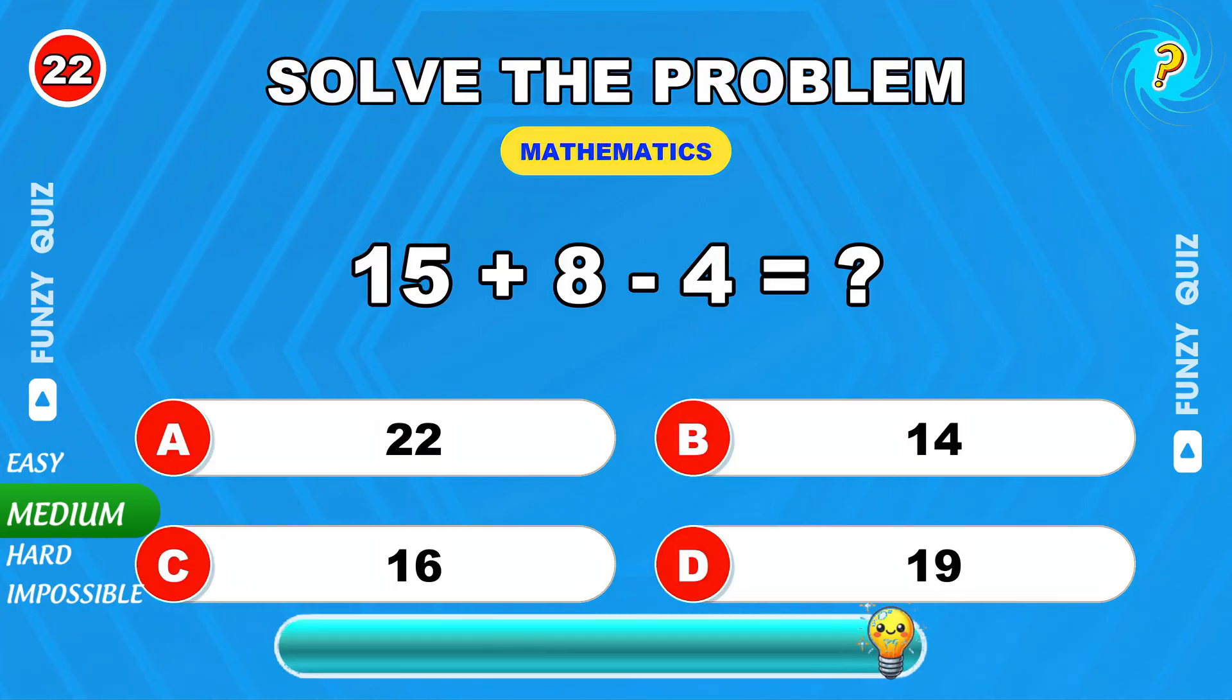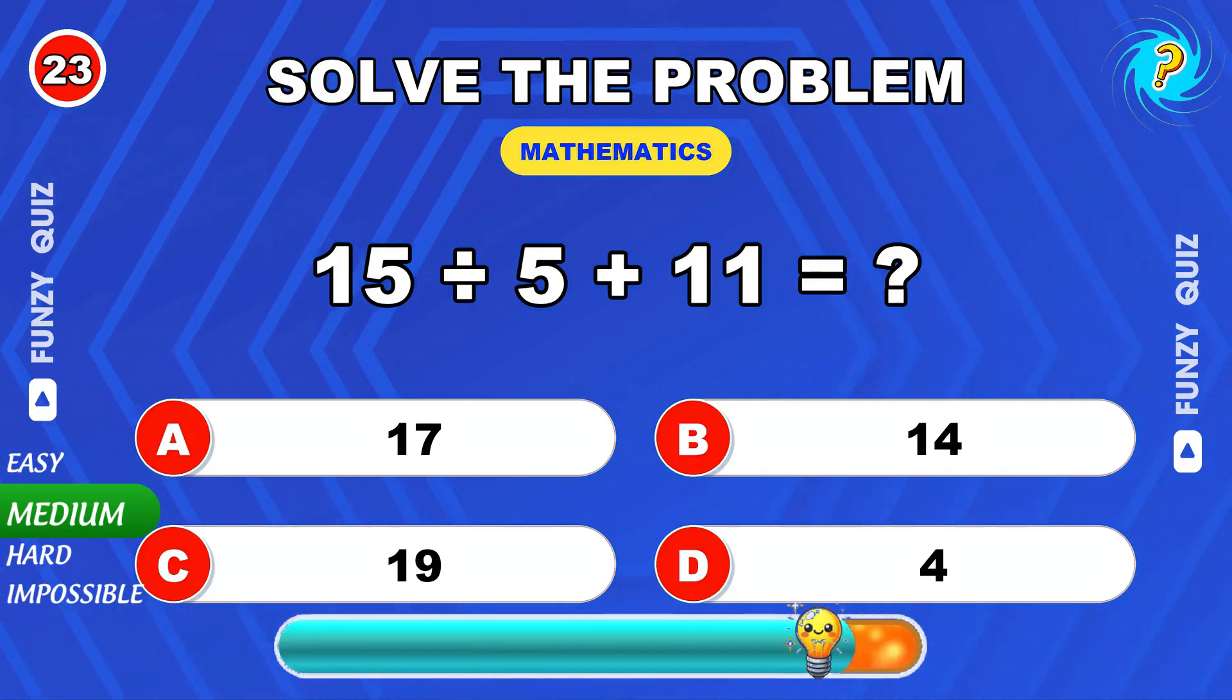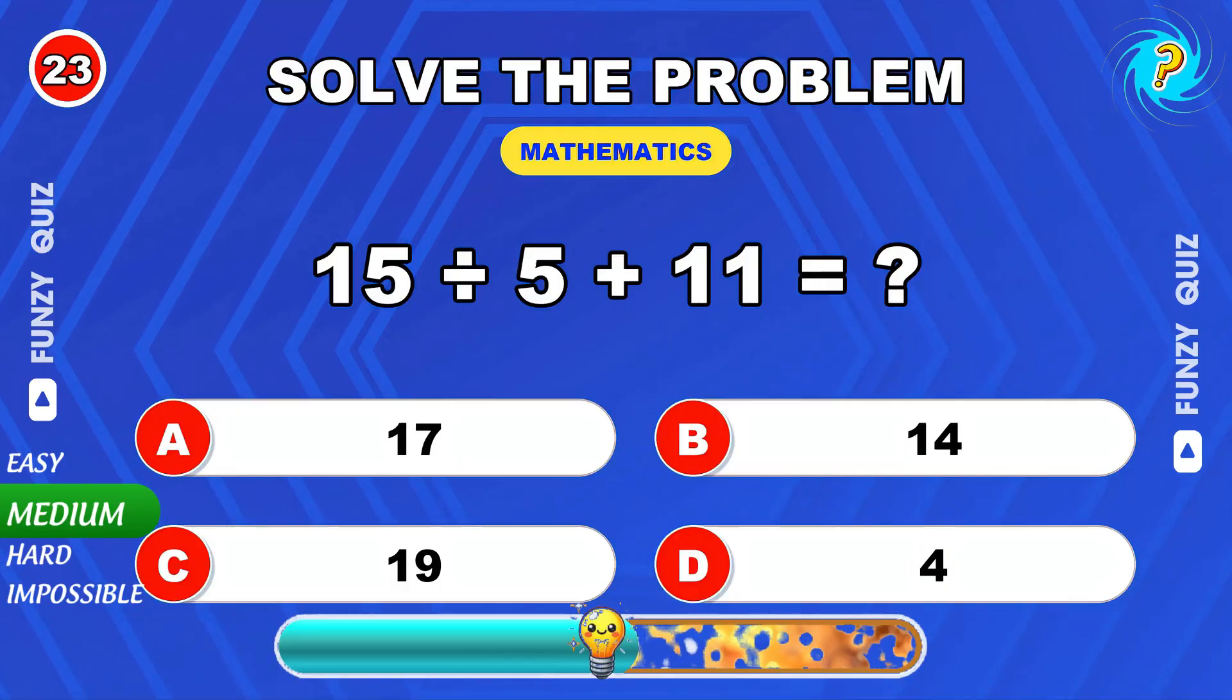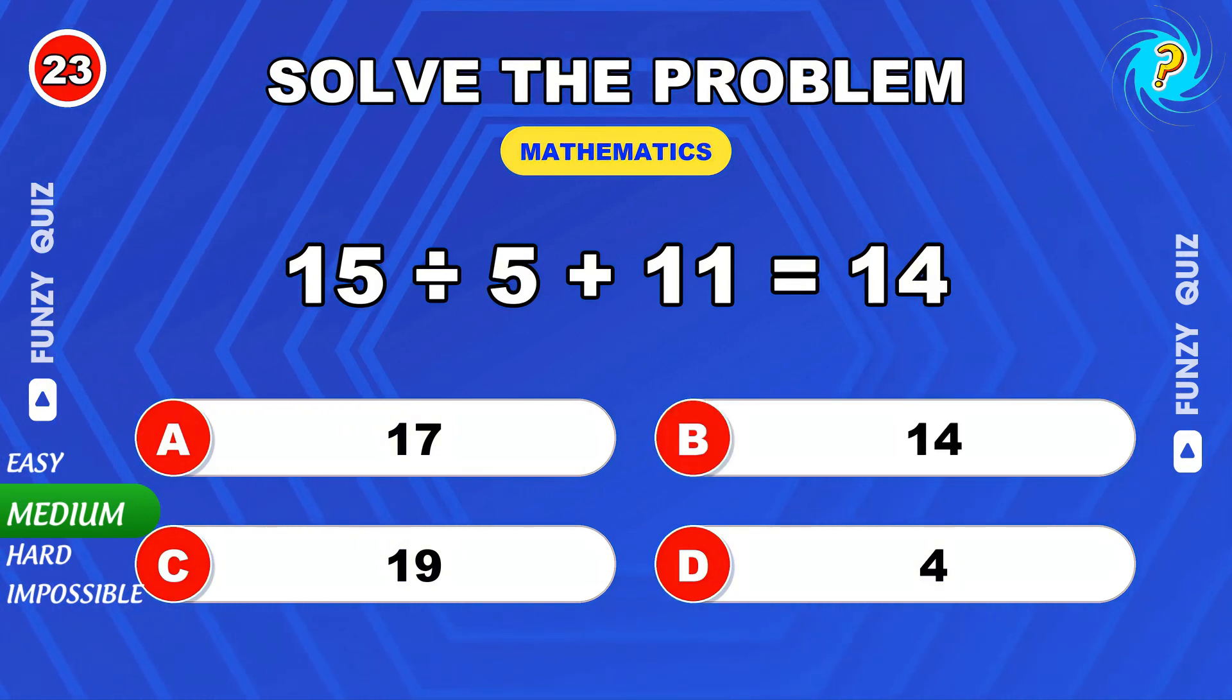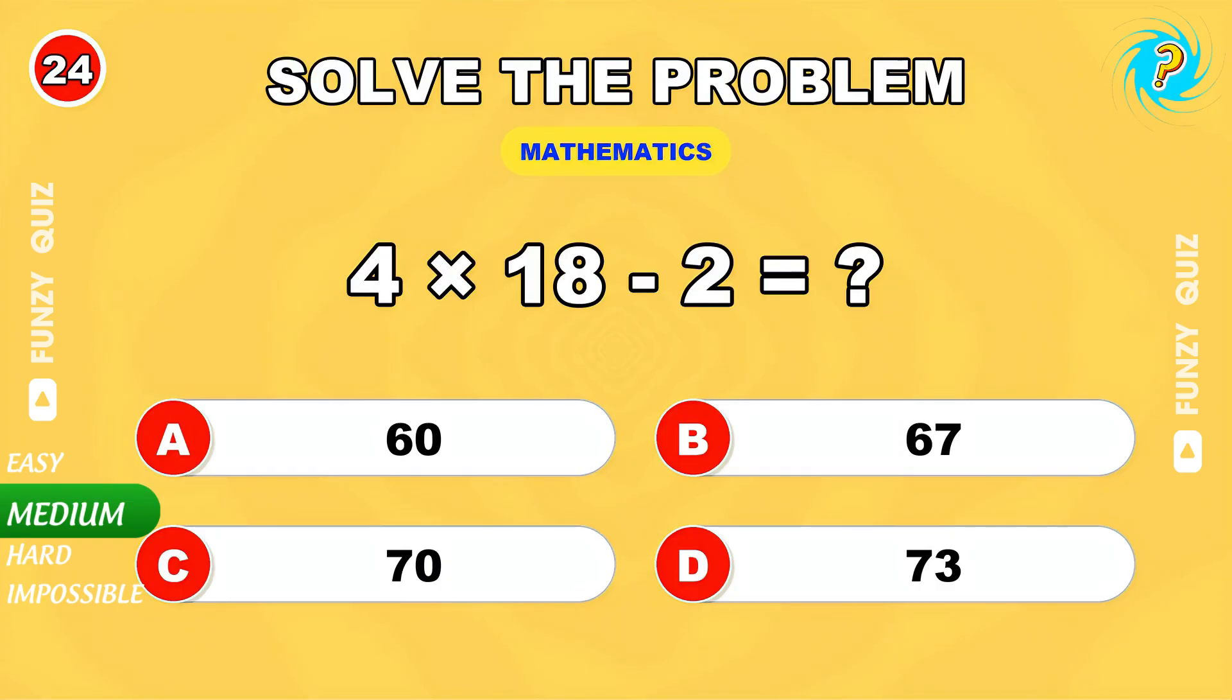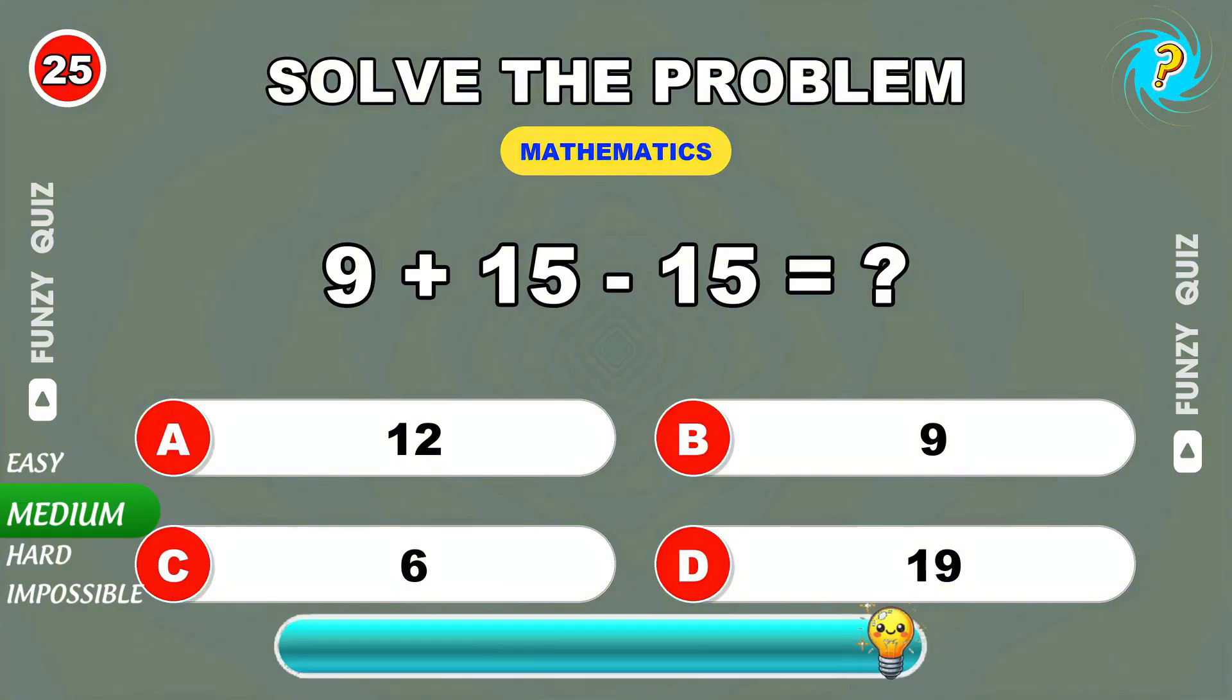15 plus 8 minus 4. 19. 15 divided by 5 plus 11. 14. 4 times 18 minus 20. 70. Workout 9 plus 15 minus 15.